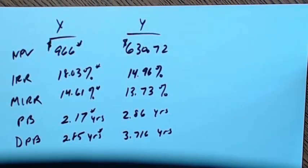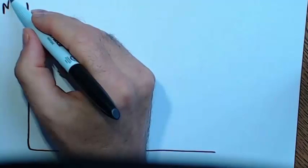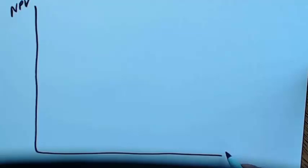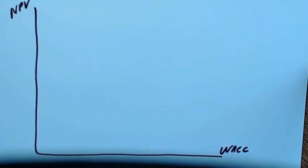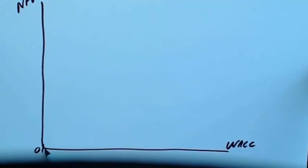Part D asks how a change in the WACC might produce a conflict between NPV and IRR rankings. Would there be a conflict if WACC were 5%? Use NPV profiles — the crossover rate is 6.22%. We plot NPV on the vertical axis and WACC on the horizontal axis, then plot the profiles for X and Y.